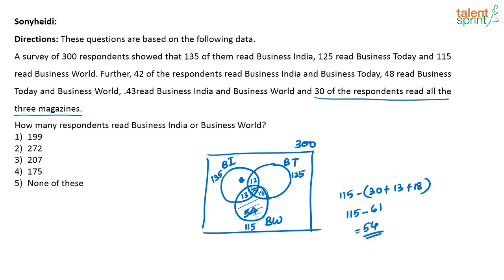Similarly, how many people read only Business India? 13 plus 12 is 25, and 25 plus 30 is 55. So 135 minus 55 — that many people will read only Business India — which is 80. So 80 people read only Business India.